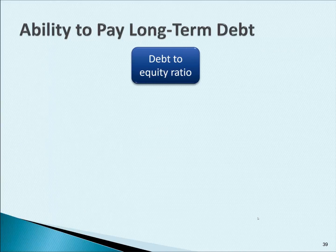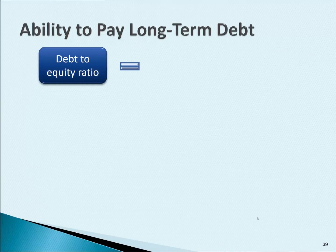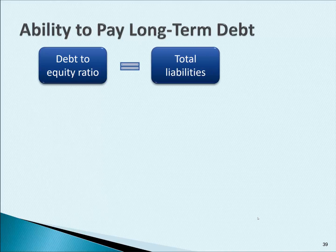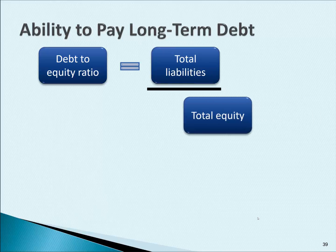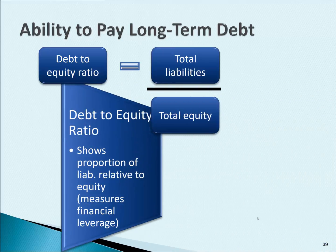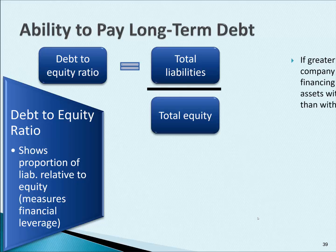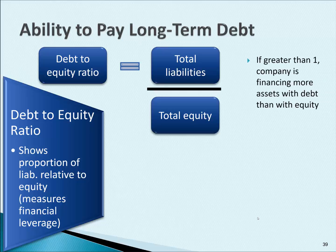The next ratio that looks at the company's ability to pay long-term debt is called the debt to equity ratio. This is simply total liabilities divided by total equity. It shows you the proportion of liabilities relative to equity — in other words, it's measuring financial leverage. If it's greater than one, the company is financing more assets with debt than with equity, which means more financial risk.